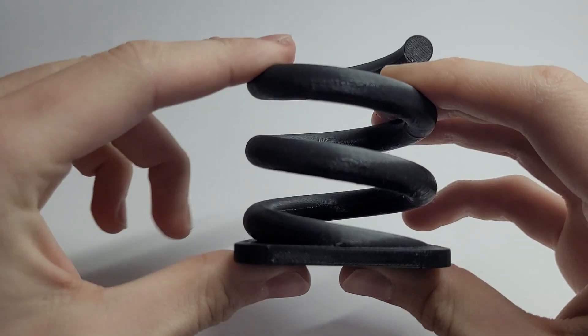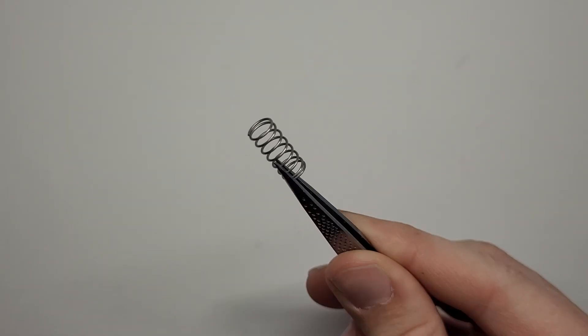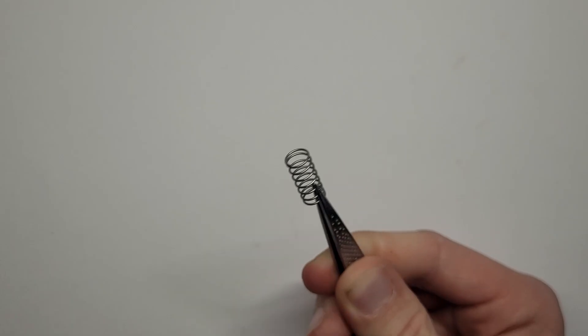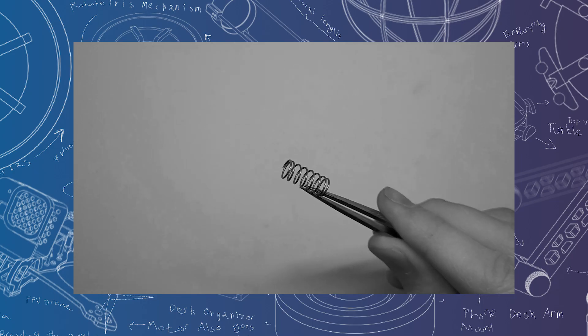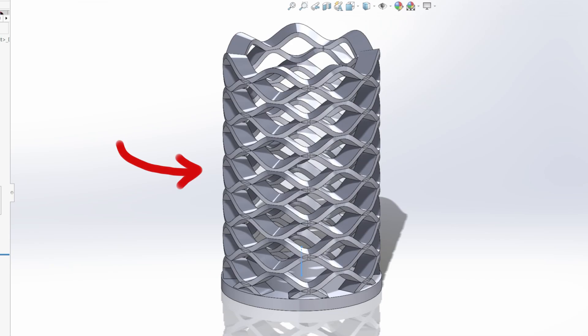All these designs have all been based off what is practical for typical manufacturing. All these spring shapes are pretty easy for a wire to be bent into. But we're not bending wire. We're 3D printing.